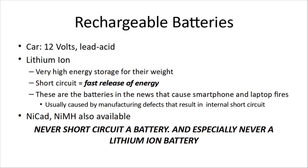Rechargeable batteries — the dominant one at the time the test was written was the lead acid battery in the car, running about 12 volts. We now have newer lithium-ion batteries with very high energy storage for their weight; this is what allows electric cars and laptops to run. A short circuit — connecting a wire between the two ends of a battery — is a fast release of energy. There's hardly any resistance, and it's enough to cause the battery to blow up or heat the wire dangerously. Even a 9-volt battery will burn your fingers. Lithium-ions are the ones usually in the news for smartphone or laptop fires, mostly caused by manufacturing defects resulting in internal short circuits. Fortunately, manufacturing has improved a lot.